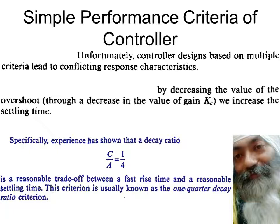With quarter decay, the first peak is, say, 1; the second will be 1/4; the third will be 1/16; and the fourth will be 1/64, which is as good as nothing. So in just two or three oscillations, things will settle down. This is what we are going to analyze — what is meant by quarter decay and how to achieve it. We will see the case of a first-order system given a PI controller, where it becomes second-order in its response and starts oscillating.